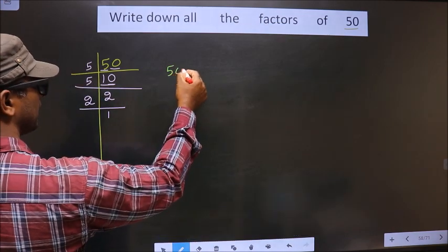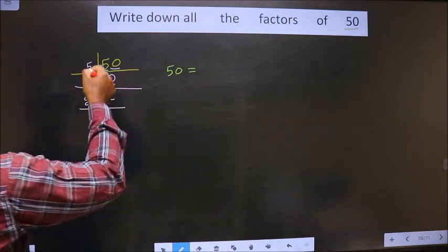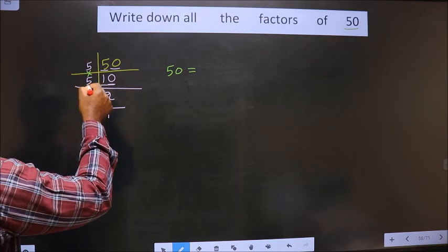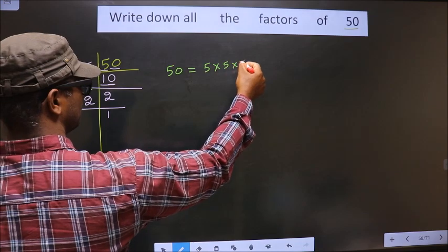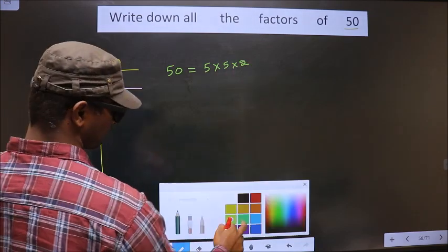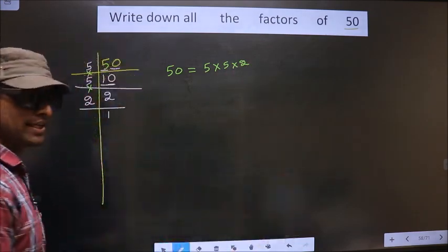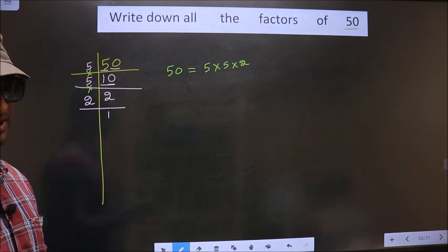So, now 50 is equal to the product of these numbers. That is 5 into 5 into 2. Okay. So far, next.